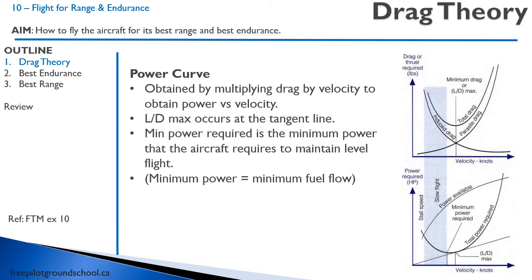From the drag curve, we can derive the power curve. Drag is given in pounds or newtons in SI units, while power is expressed in horsepower or watts — a watt being a newton meter per second. To go from newtons to newton meters per second, we simply multiply by velocity in meters per second. So if we multiply every point on the total drag curve by its corresponding velocity, we end up with the power required at various points.